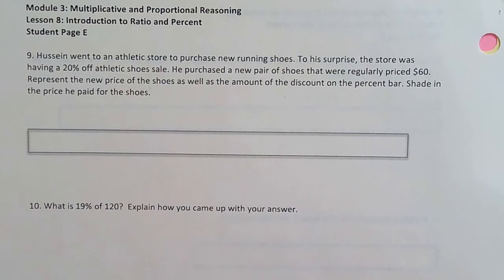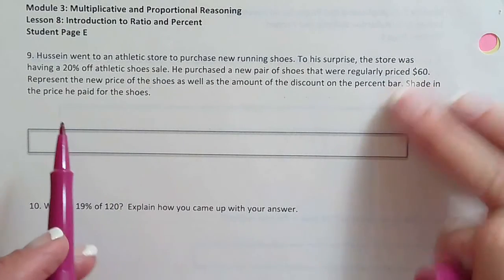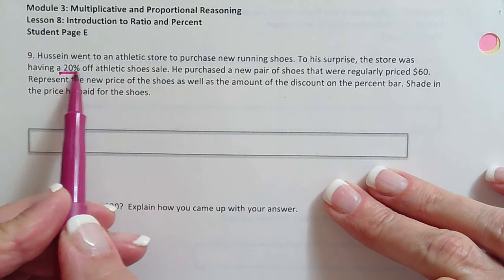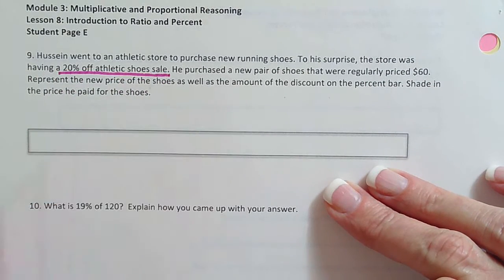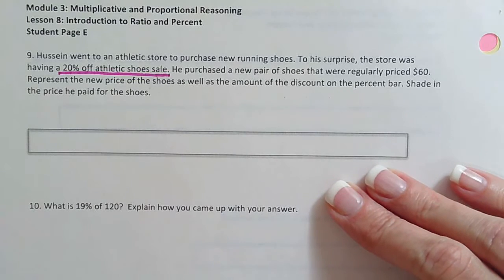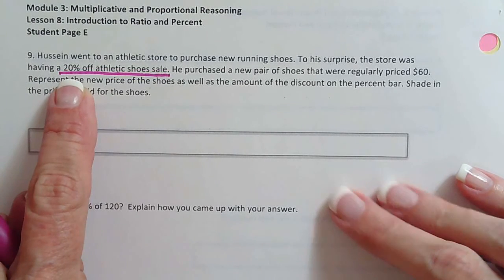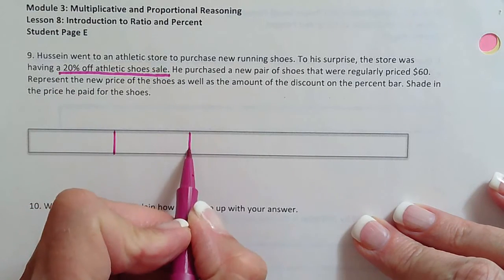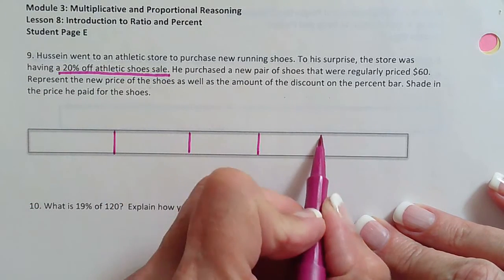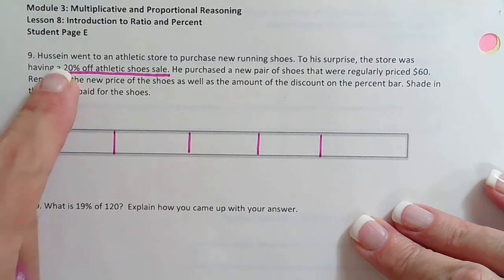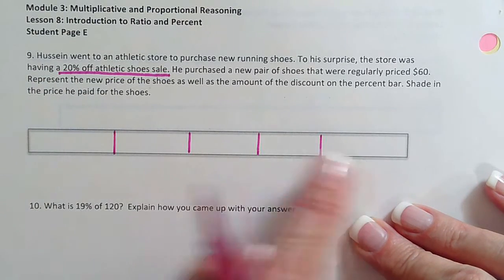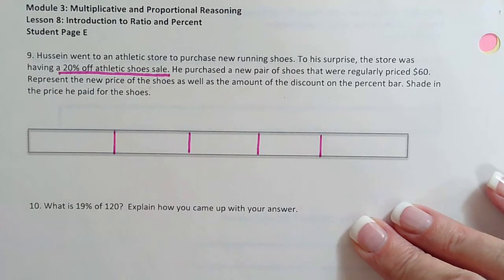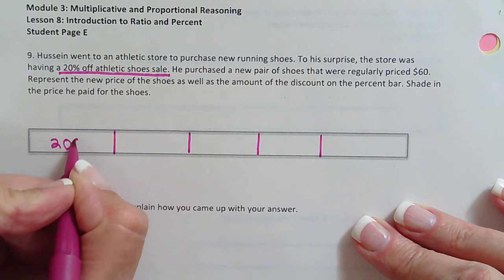Okay, so Hussein went to an athletic store to purchase new running shoes. To his surprise, the store was having a 20% off athletic shoe sale. So the minute I see that, I go, how many 20s go into 100? 5. So let's divide the bar into 5 equal parts. So that tells me this. So 20 times 5 is 100. So I have 20% here.